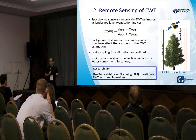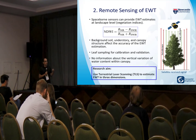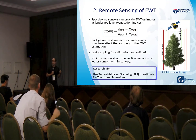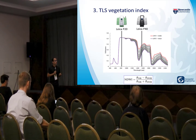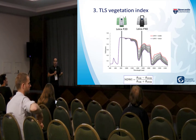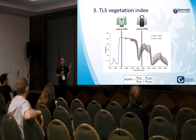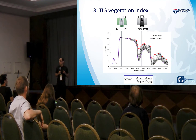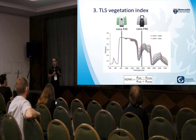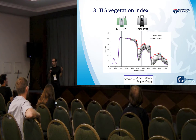The idea is to use TLS to estimate the water content in 3D and then use these estimates to calibrate and validate the satellite estimation. Instead of using two spectral bands, we use two different TLS instruments — one operating in near infrared and the other in shortwave infrared wavelengths — so we can combine the two point clouds and calculate the vegetation index on a point-by-point basis to produce a 3D point cloud of water content distribution.